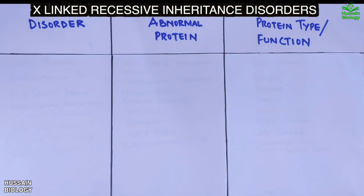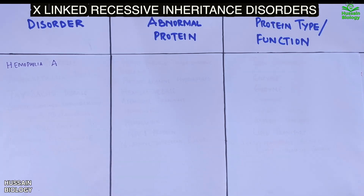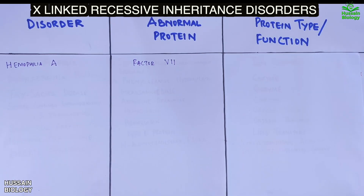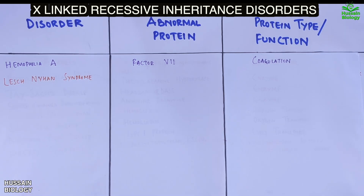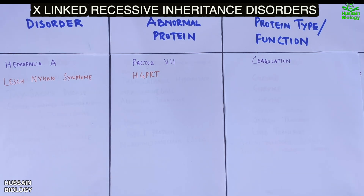Now let's get to X-linked recessive disorders. First is hemophilia A, where abnormal factor VIII protein affects blood coagulation. Second is Lesch-Nyhan syndrome, where there is a deficiency of HGPRT protein, which is important for purine biosynthesis.